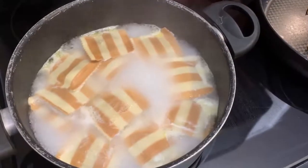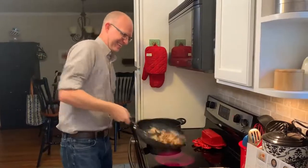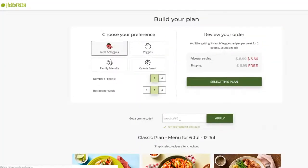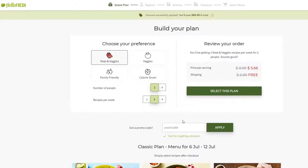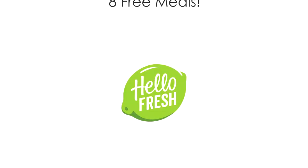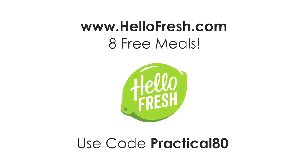Right now, the price starts at $5.66 per serving, which is pretty reasonable for a date night. And you know what's even more reasonable? The 8 free meals that HelloFresh is giving to fans of the channel who visit HelloFresh.com and enter Practical80 at checkout. That's $80 off your first month of HelloFresh. Just click the link in the description and use code Practical80 at checkout.